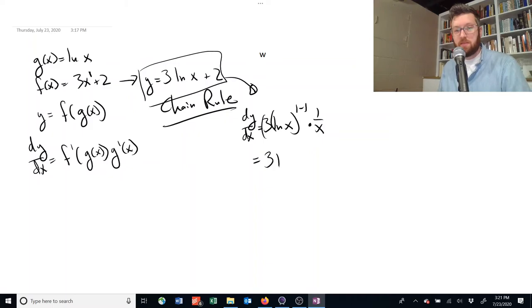So 3 times the natural log of x raised to the power of 1 minus 1 times 1 over x is our derivative.